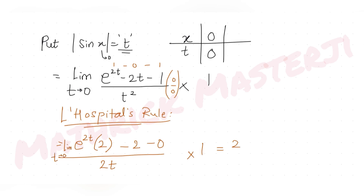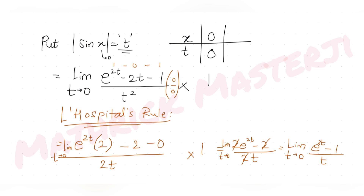Simplifying: limit t→0 of [2e^(2t) - 2] / 2t. The factor of 2 cancels, giving limit t→0 of [e^(2t) - 1] / t. Substituting t = 0: e^0 - 1 = 0 over 0, so we still have the 0/0 form and must apply L'Hôpital's rule again.